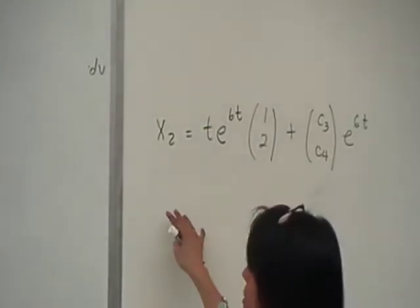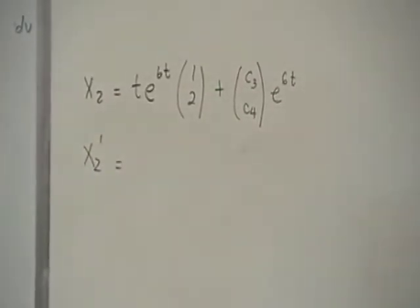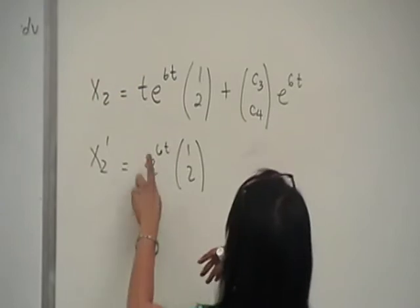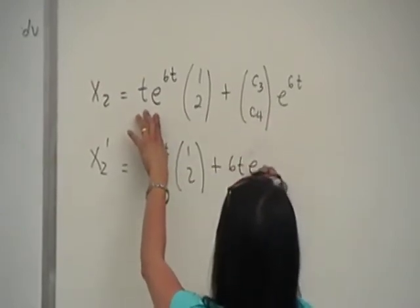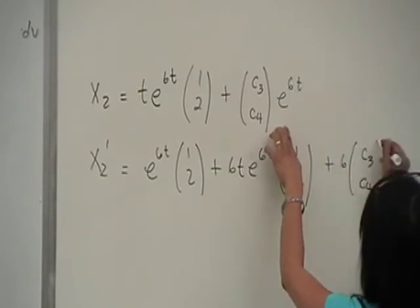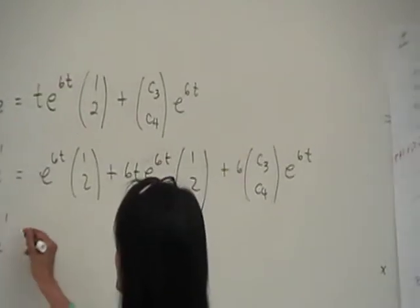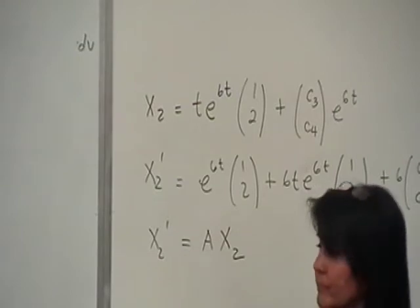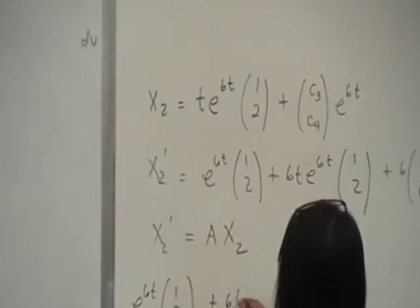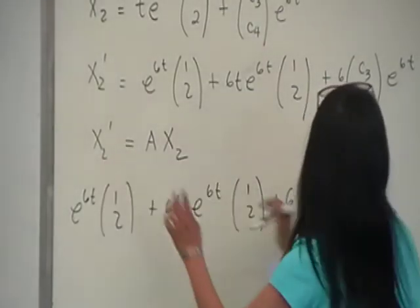So if that is x2, then what we did was we got x2 prime, right? So x2 prime, because now we want to substitute this in the original equation, system of equations. So the prime of this will be what? E to the 6T, 1, 2, right? If I differentiate the T first. If I differentiate this next, I'll have a plus 6T, e to the 6T, 1, 2. Correct? And then plus this, which is 6, c3, c4, derivative of that, e to the 6T. What you will do is you will put this now there, which is x2 prime equals Ax2. And then you show me one. So x2 prime is this, so you'll have e to the 6T, 1, 2, plus 6T, e to the 6T, 1, 2, plus 6, c3, c4, e to the 6T. That's the left, right? Not the right, the left.